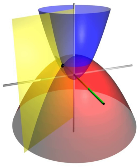In geometry and kinematics, coordinate systems are used to describe the position of points and the angular position of axes, planes, and rigid bodies. In the latter case, the orientation of a second — typically referred to as local coordinate system, fixed to the node — is defined based on the first, typically referred to as global or world coordinate system. For instance, the orientation of a rigid body can be represented by an orientation matrix, which includes, in its three columns, the Cartesian coordinates of three points. These points are used to define the orientation of the axes of the local system; they are the tips of three unit vectors aligned with those axes.